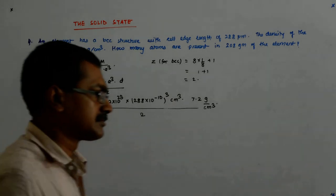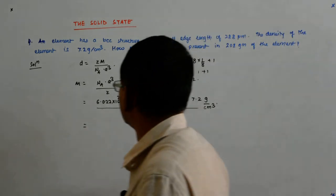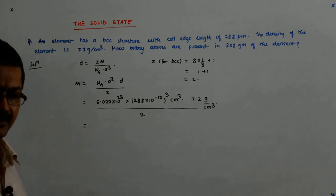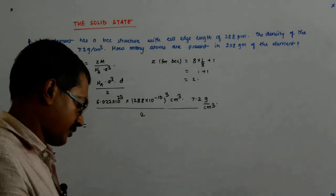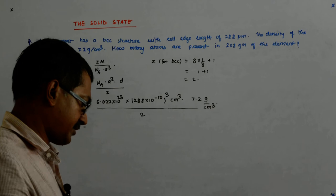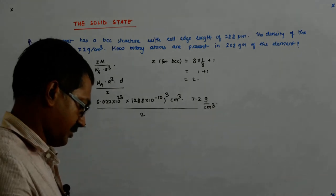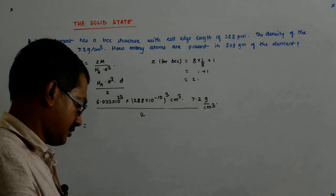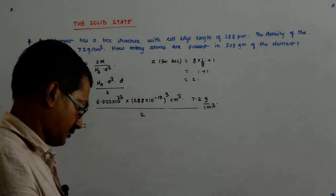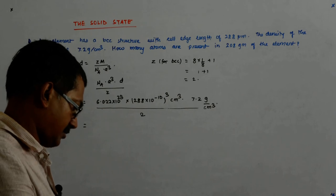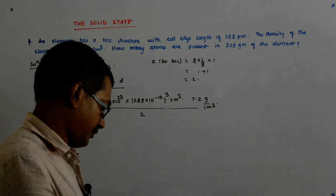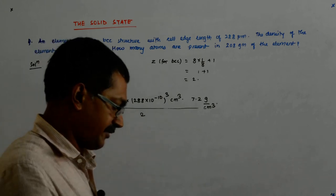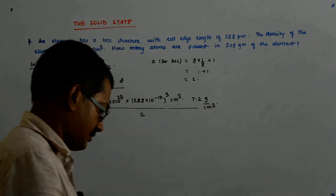That should give me the molecular mass. Okay, now I am doing it with the calculator. You should be solving it by a log table. 6.022 into 10 to the power 23 into 288 into 10 to the power minus 10 to the power 3, into 7.2 divided by 2. So I get 51.78.